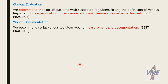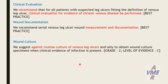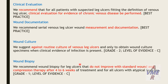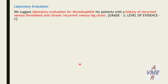Wound documentation: we recommend serial venous leg ulcer wound measurement and documentation. Wound culture: we suggest against routine culture of venous leg ulcer, and only obtain wound culture specimen when clinical evidence of infection is present. Wound biopsy: we recommend wound biopsy for leg ulcers that don't improve with standard wound and compression therapy after 4 to 6 weeks of treatment, and for all ulcers with atypical features. Lab evaluation: we suggest lab evaluations for thrombophilia for patients with history of recurrent venous thrombosis and chronic recurrent venous leg ulcers.